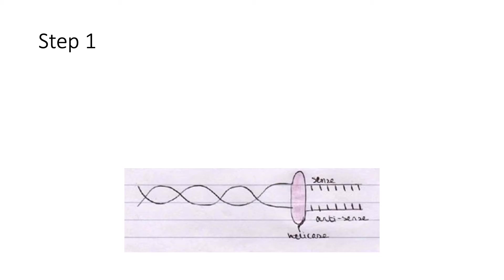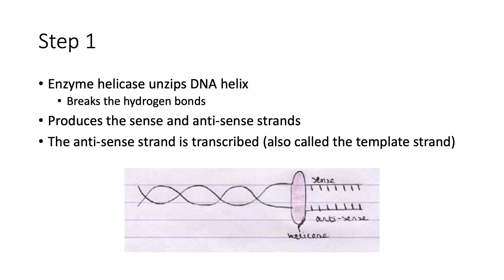In step one, as you can see in the diagram, the enzyme helicase unzips the DNA helix by breaking the hydrogen bonds between the bases of the two strands. This produces the sense and antisense strands, where the antisense strand is going to be transcribed. It is also referred to as a template strand.